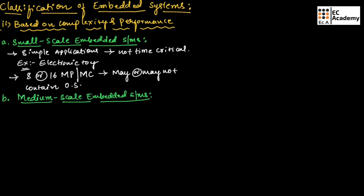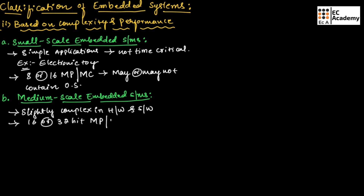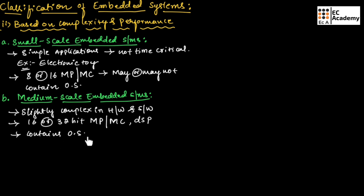Now let us understand medium scale embedded systems. Medium scale embedded systems are slightly complex in hardware and software compared to small scale embedded systems. They are designed using low cost 16-bit or 32-bit microprocessors or microcontrollers, and can also be designed using DSP (Digital Signal Processor). They usually consist of an operating system for their operation.